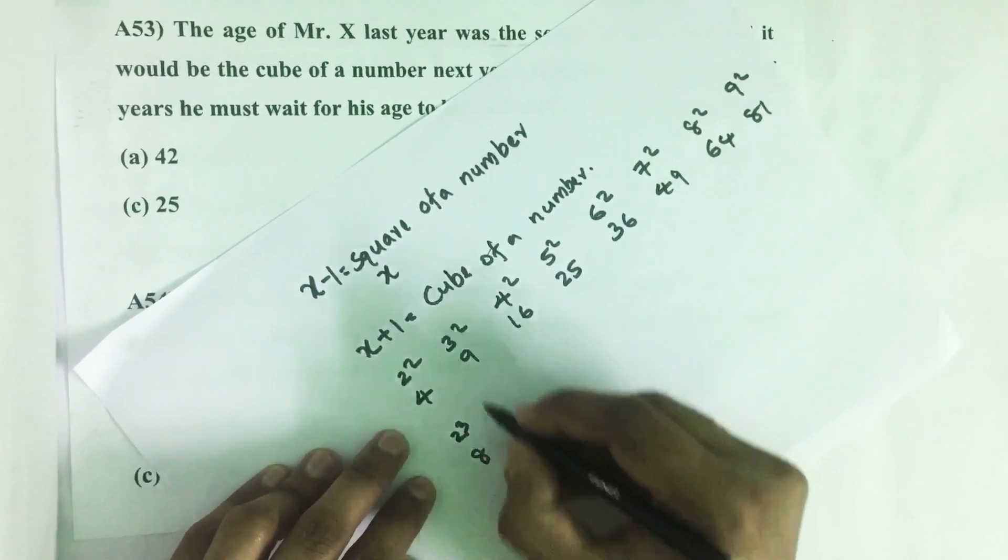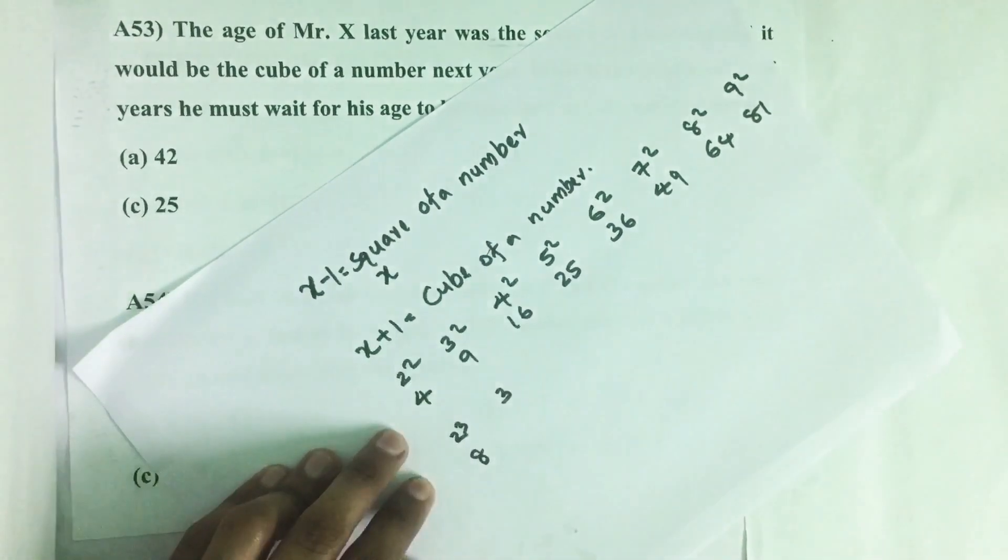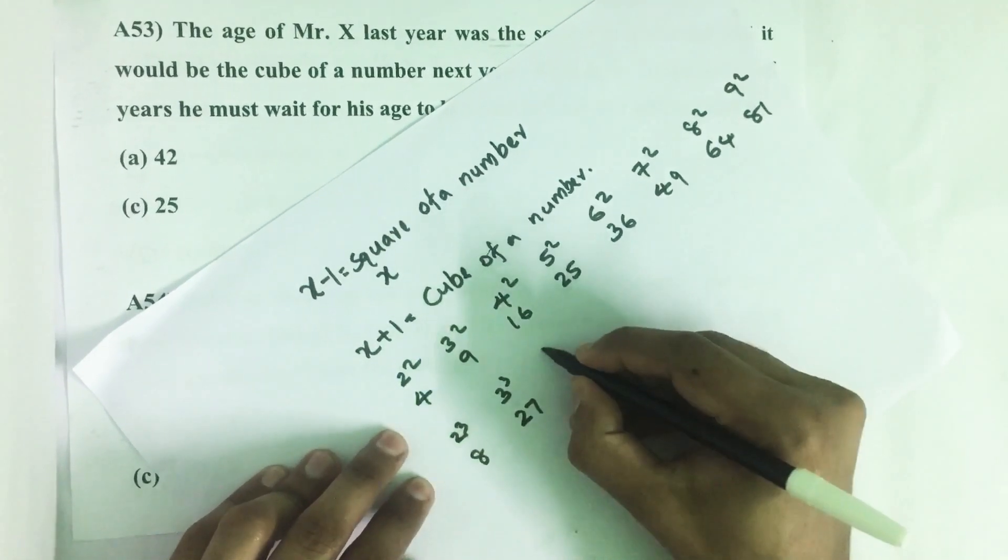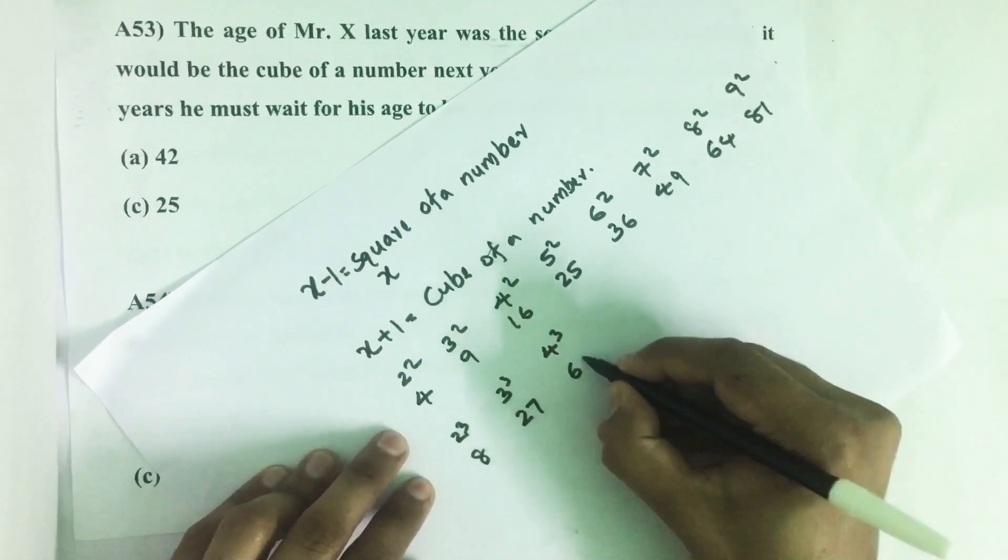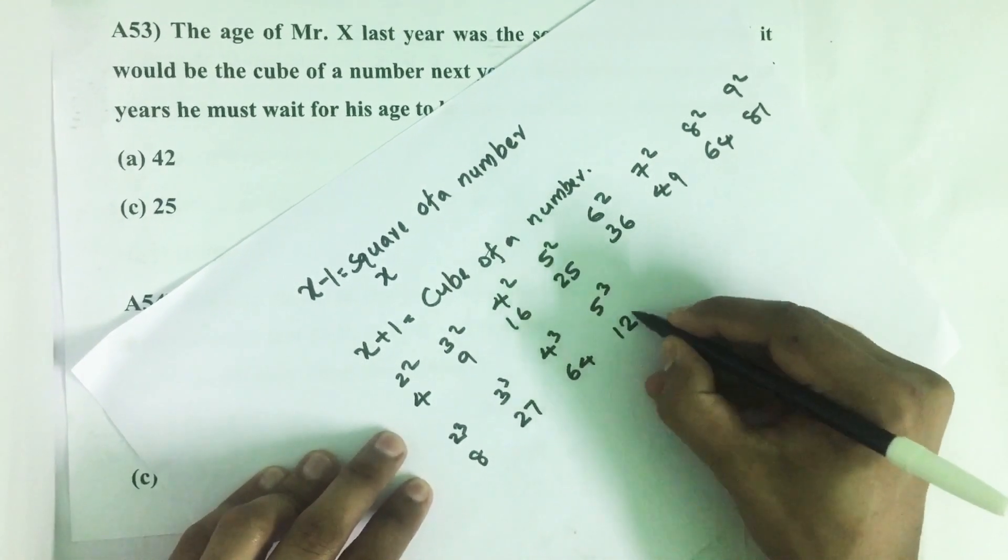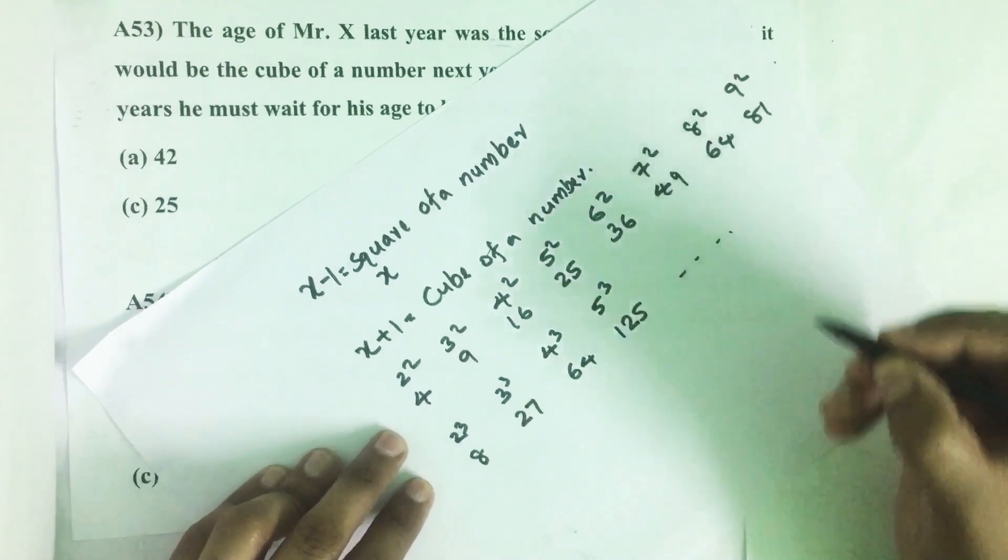Similarly, cubes of numbers: 2 cubed equals 8, 3 cubed equals 27, 4 cubed is 64, 5 cubed is 125, and so on.